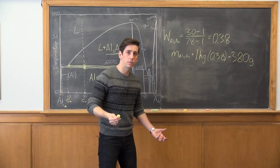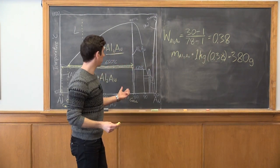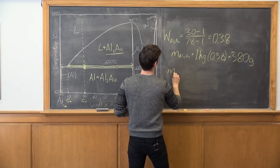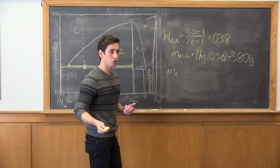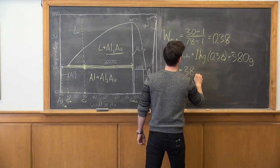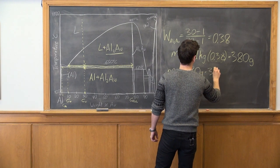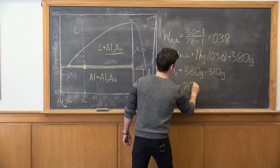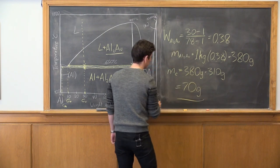So if we recall from the last question, we determined the amount of primary aluminum to gold was 310 grams. So the mass of our eutectic aluminum to gold is just going to be the difference, which is 70 grams.